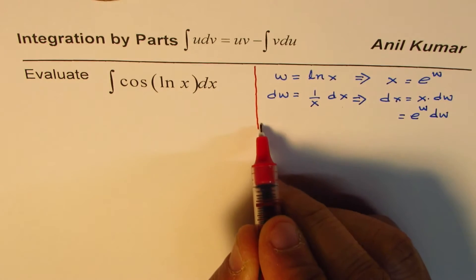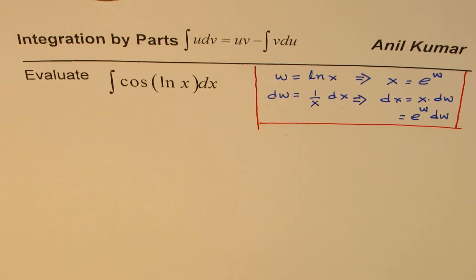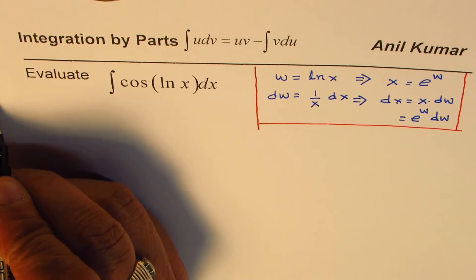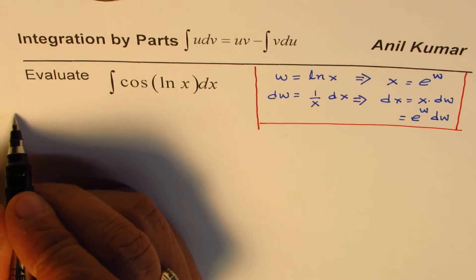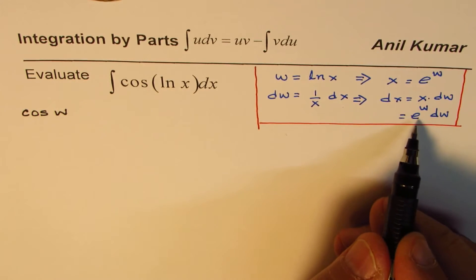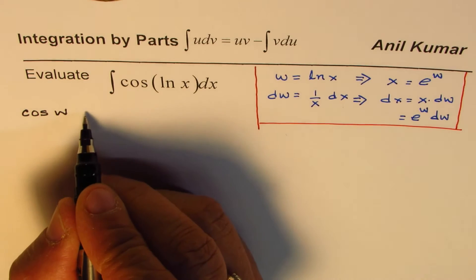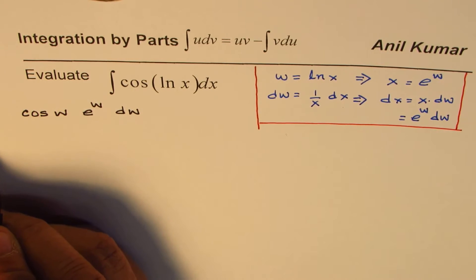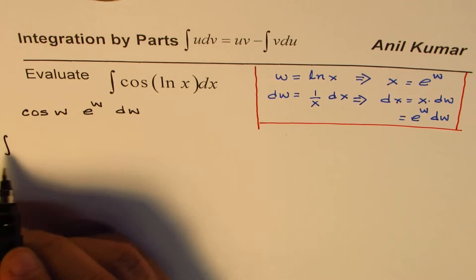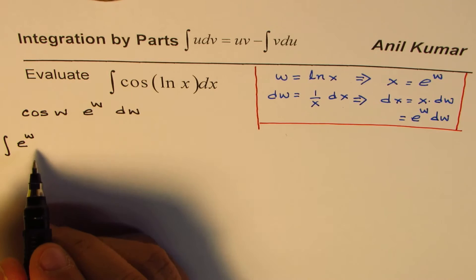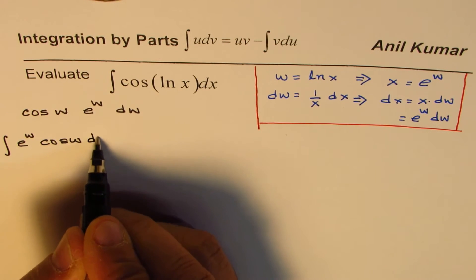Now let's substitute what we have got. We can write the integral as: cos(ln x) dx becomes ∫cos(w) · e^w dw, which we can reorganize as ∫e^w cos(w) dw. It's good to always reorganize — that is also correct.